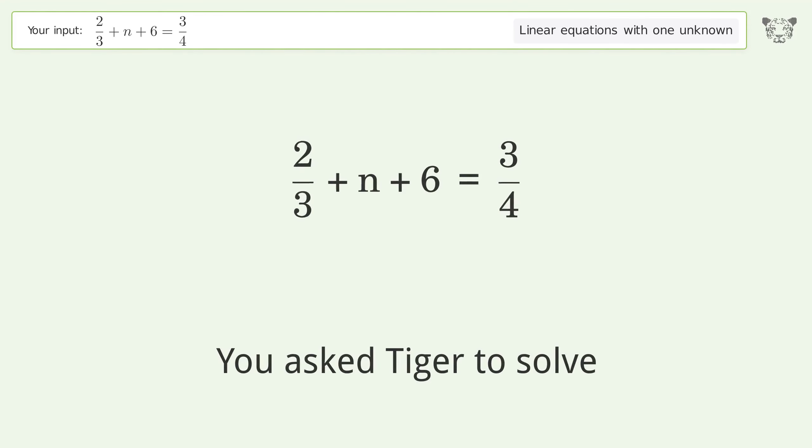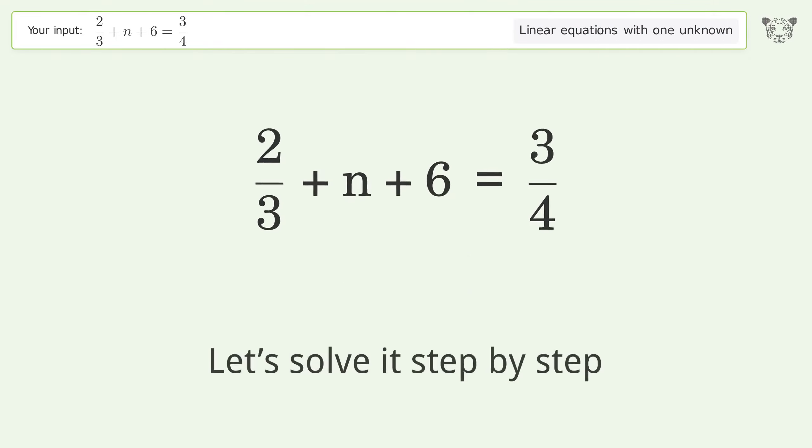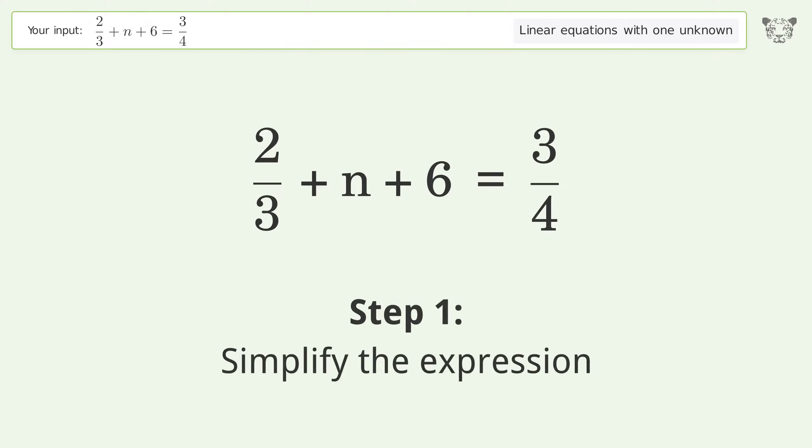You asked Tiger to solve this. This deals with linear equations with one unknown. The final result is n equals negative 71 over 12. Let's solve it step by step. Simplify the expression, group like terms.